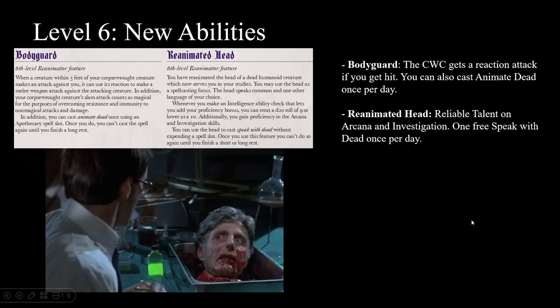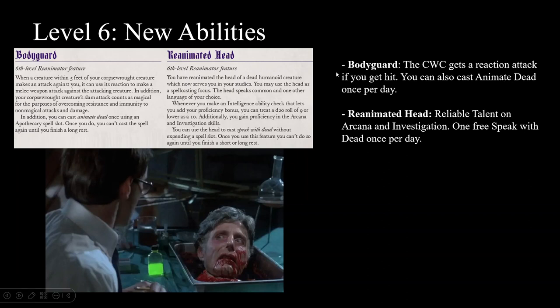At 6th level, you have two features. The first is Bodyguard — whenever you get hit and your Corpse Art creature is within 5 feet of the attacker, it can make 1 attack as a reaction. You can also expend an Apothecary slot to cast Animate Dead once per day. This is a nice workaround because normally, a 9th level Apothecary could spend spell slots to create 20 zombies, then short rest and create 20 more — getting 80 zombies by noon, which feels pretty broken. Limiting it to once per day is much more fair.